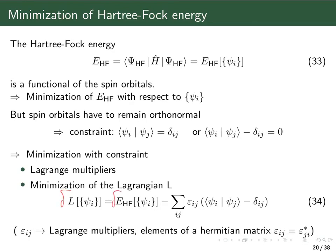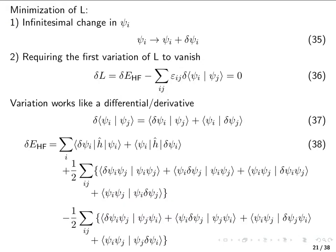So δL equals the linear variation of the Hartree-Fock energy plus the linear variation of this Lagrange multiplier expression. The Lagrange multipliers are constants, so the only thing which can be varied is the overlap integral — meaning we move the delta inside. We then get the condition that it has to be a Hermitian matrix in order for the Lagrangian to be real. We are going to look at an infinitesimal change in our variable, which are our spin orbitals.